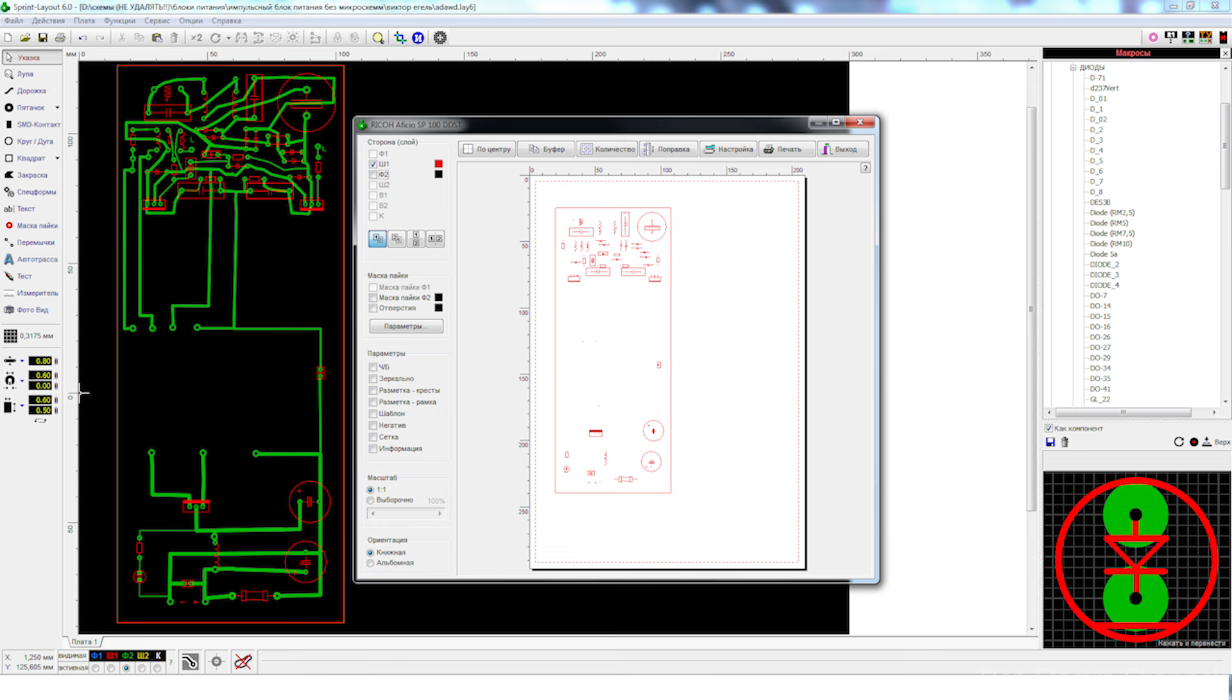Now only the top board image will be displayed. After this, click the print button in the right corner.